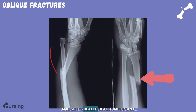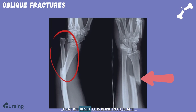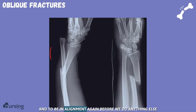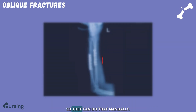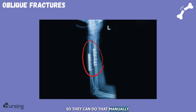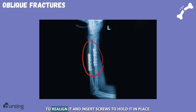It's really important that we reset this bone into place and get it back in alignment before we do anything else. They can do that manually, or they may have to take the patient to surgery to realign it and insert screws to hold it in place.